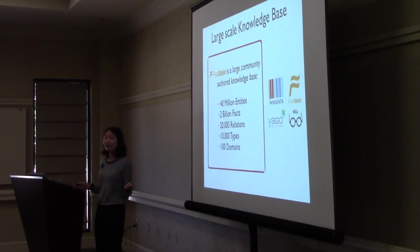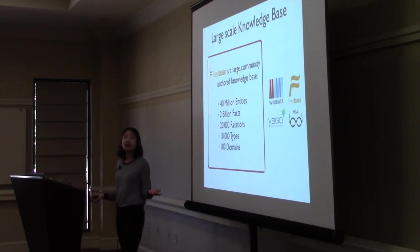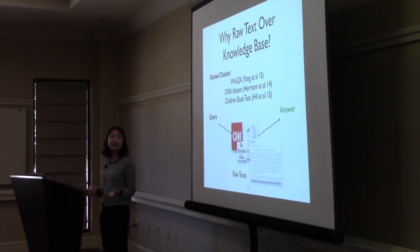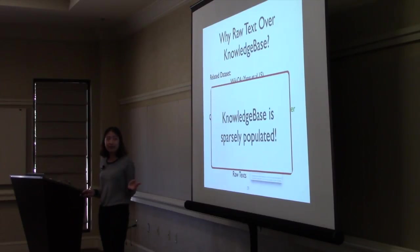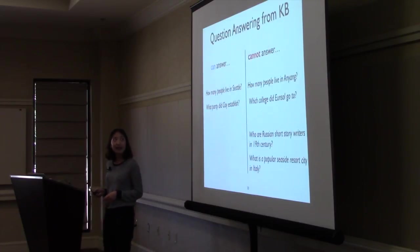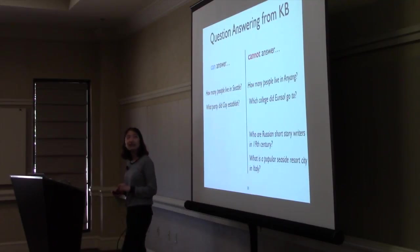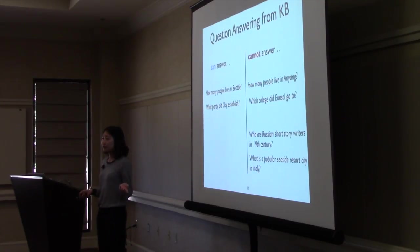So suppose we have this semantic parser that relatively works and these large-scale knowledge bases that contain two billion facts. People still would like to look at raw text to get answers. Why? The main problem with the knowledge base is that it has a fixed ontology, and that fixed ontology, however large it is, is always very sparsely populated. We studied how empty the knowledge bases are in the next work. We looked at some questions and then see whether they can be answered in this knowledge base with two billion facts.